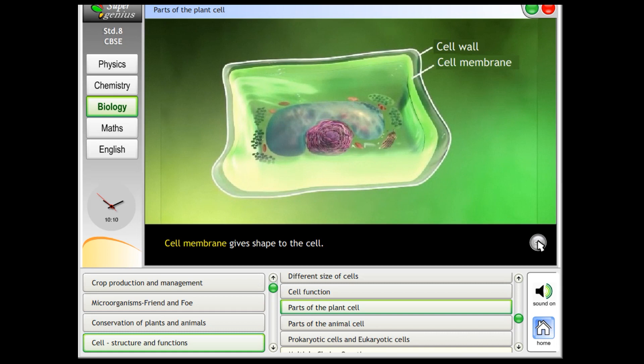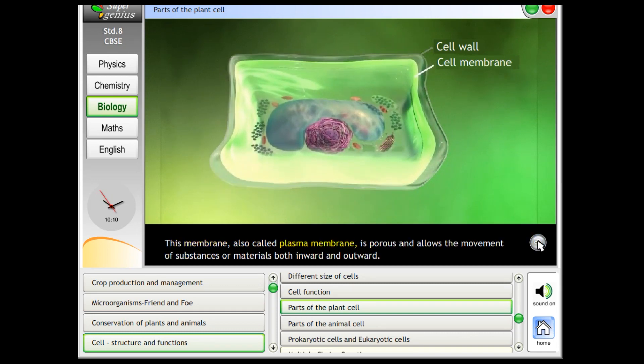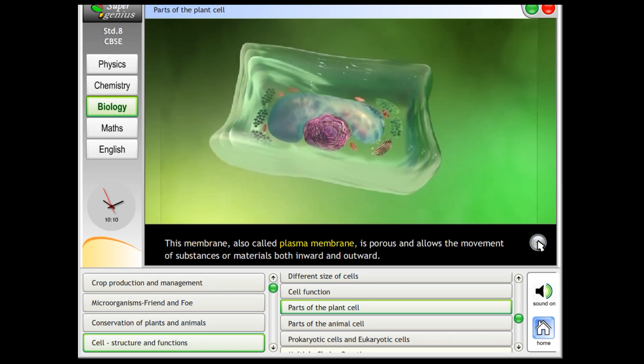Cell membrane gives shape to the cell. This membrane, also called plasma membrane, is porous and allows the movement of substances or materials both inward and outward.